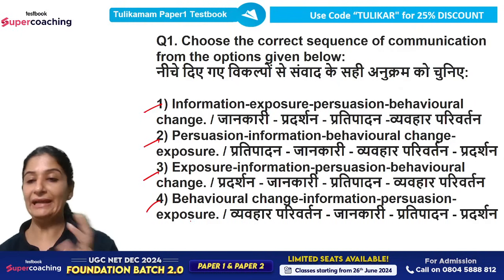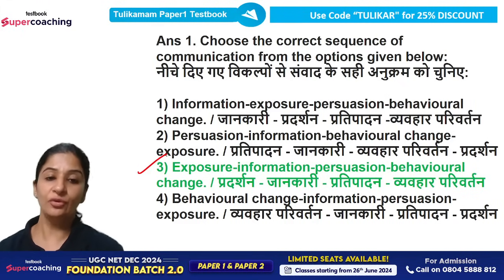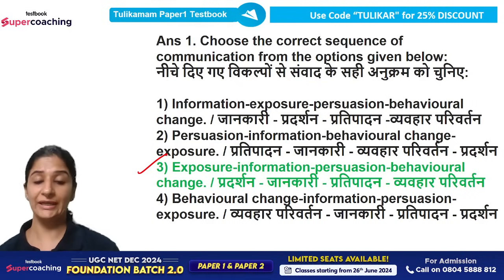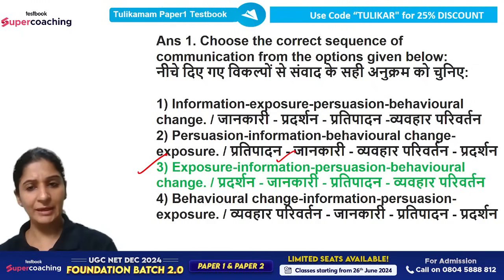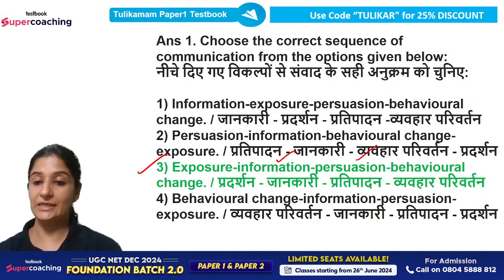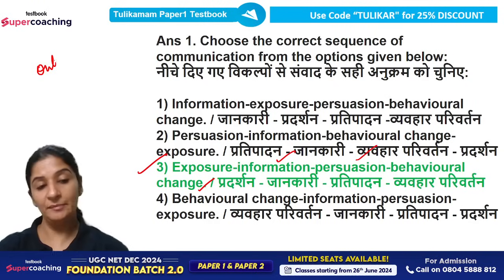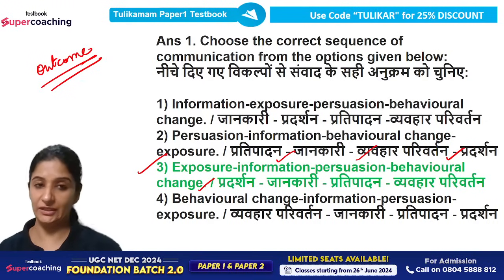What is the end result of communication and where does it begin? Communication starts with exposure — we get information about something or we are exposed to a situation. Next, we receive related information in that context. Then, something is said to persuade us. Finally, the outcome that emerges is behavioral change. So option C is the right answer.